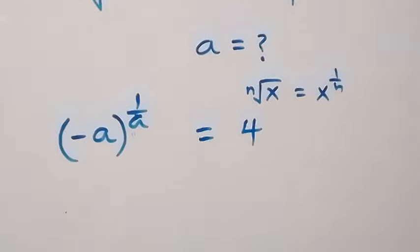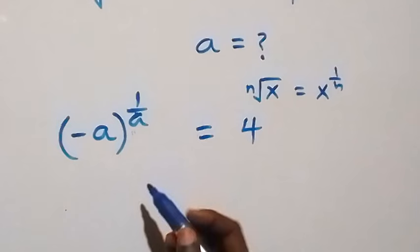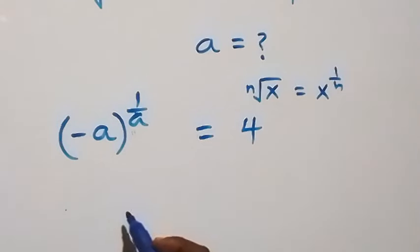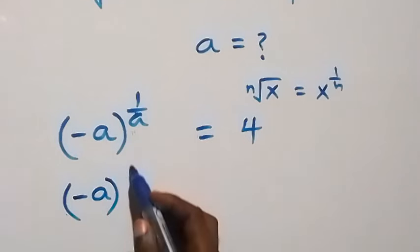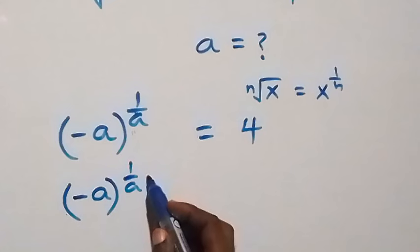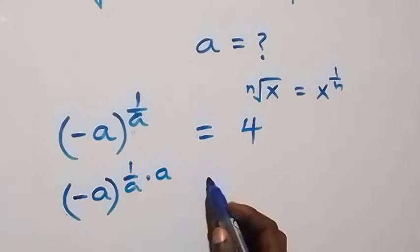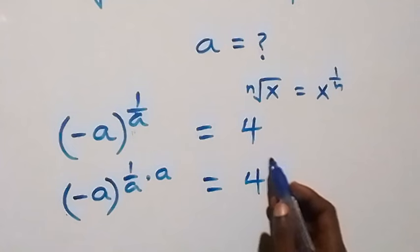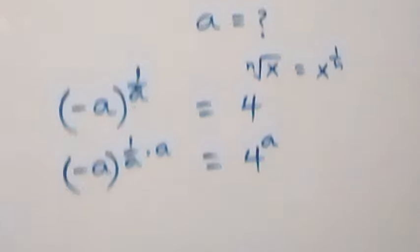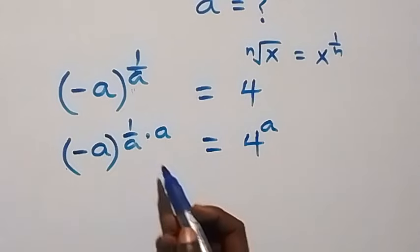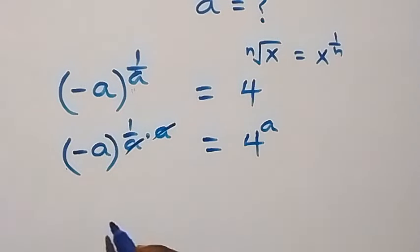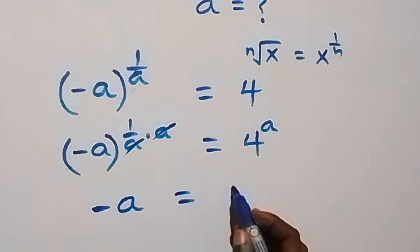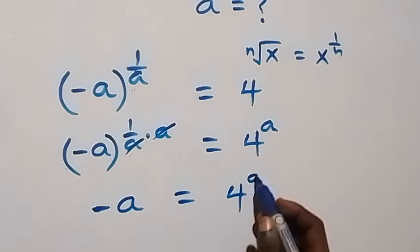From here, let's remove this 1 over a. It implies we multiply both sides' powers by a. So we have minus a raised to power 1 over a, multiplied by a, then equals to 4 raised to power a on this side. This means the 1 over a and a cancel each other, so we are left with minus a, which is equal to 4 raised to power a.